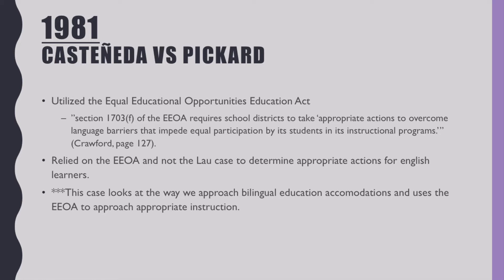Also in 1981, the case of Castaneda v. Pickard utilized the Equal Educational Opportunities Act. Based on Section 1703-F of the EEOA, school districts are required to take appropriate actions to overcome language barriers that impede equal participation by students in instructional programs. This case fully relied on the Equal Educational Opportunities Act, not the Lau case, to determine appropriate actions for English learners. It shaped the way we approach bilingual education accommodations, using the EEOA to guide appropriate instruction for bilingual programs to help English language learners get the accommodations they need.